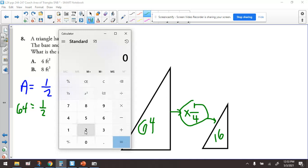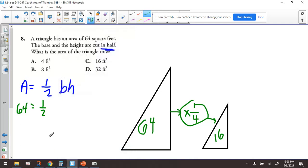So if I double 64 to get what the product of those two numbers would have to be, we would need two numbers that would equal 128. Two numbers that would multiply to be 128, to be our base and our height.